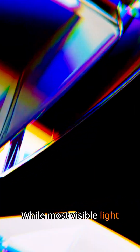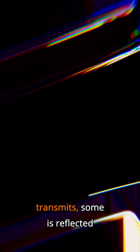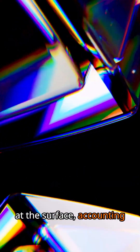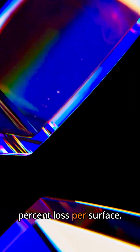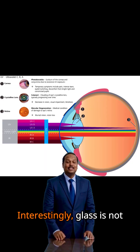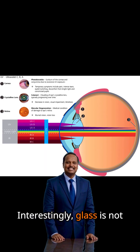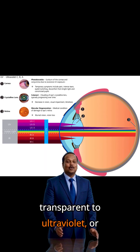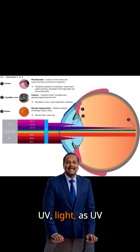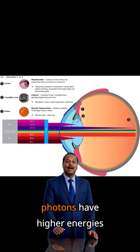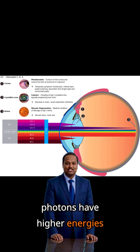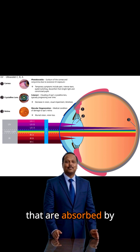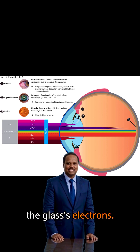While most visible light transmits, some is reflected at the surface, accounting for about a 4% loss per surface. Interestingly, glass is not transparent to ultraviolet or UV light, as UV photons have higher energies that are absorbed by the glass's electrons.